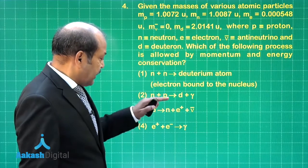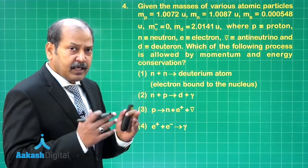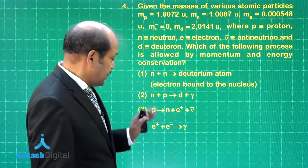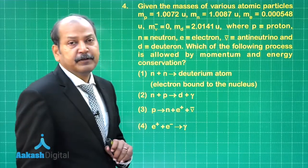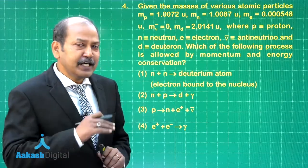Let us also analyze the other options. If you look at the third option, clearly mass of proton is less than mass of neutron itself. So the Q value for the third process is going to be negative. So this is ruled out. It will not happen.